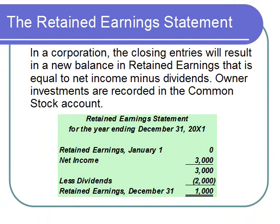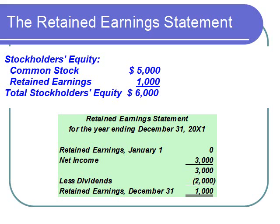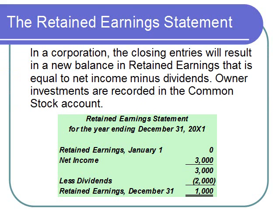Corporations utilize two accounts for owner equity. The common stock account is used for owner investments, and retained earnings summarizes net income and dividend payments. A retained earnings statement for our corporation would show a beginning balance of zero since the corporation was just started. Revenues minus expenses equal $3,000 net income, which becomes part of retained earnings. Dividends are subtracted from retained earnings, leaving an ending balance of $1,000. The owner investment of $5,000 in common stock plus the $1,000 in retained earnings equals total stockholder equity of $6,000. The closing entries transfer balances from temporary accounts into the permanent owner equity accounts.